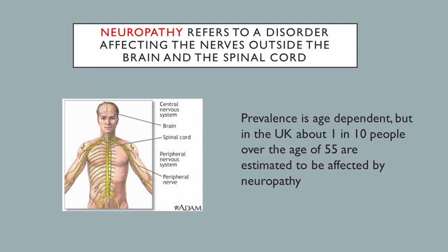To understand what a neuropathy is, it helps to understand how the nervous system functions. The nervous system is like a computer — it works through electricity. The main computer is the brain, and the nerves are like cables. The nerves connect everything, running from the brain down the spinal cord and coming out at the sides to connect the body with the main computer system — all working through electricity.